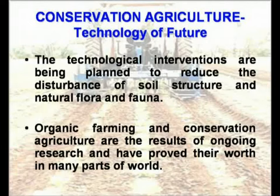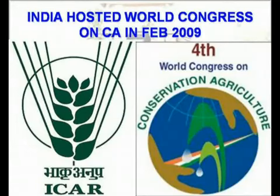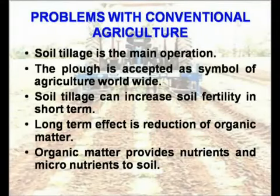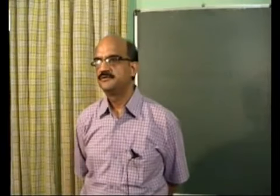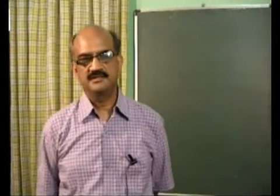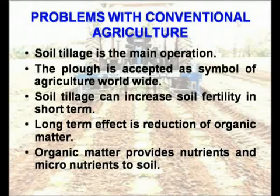India hosted the fourth conference on conservation agriculture, and as a result it is now taking place in India as well. The main operation of conventional agriculture is tilling, and we use many implements for tilling the soil. The plow symbolizes conventional agriculture — our mindset is that tilling is the first and required operation.